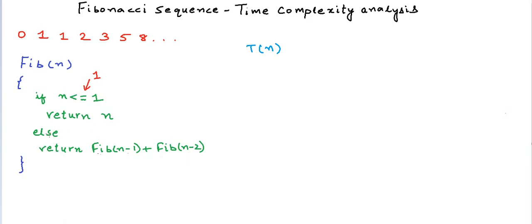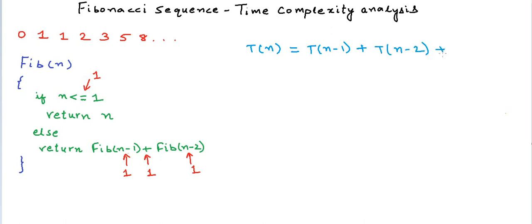Because n is greater than 1, the control goes to the else condition. Here we make two recursive calls passing arguments n-1 and n-2, so we make two subtractions — one unit of cost for each subtraction — and then one unit of cost for the addition. So for n greater than 1, there are four simple operations: two subtractions, one addition, and one comparison. Time taken to calculate Fib(n) can be written as T(n-1) plus T(n-2) plus 4 units of time for these simple operations.